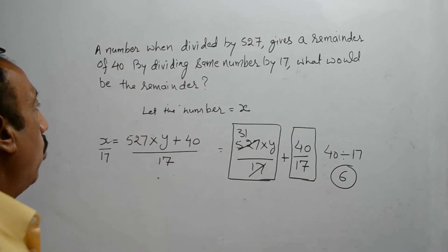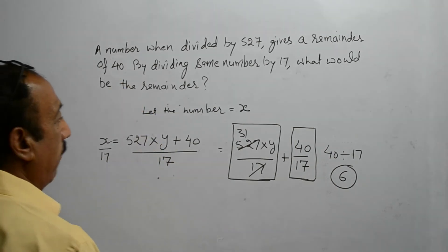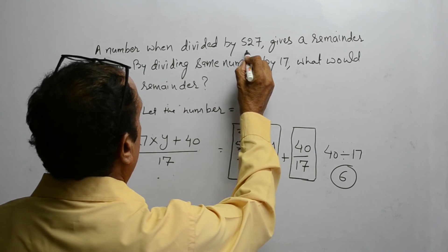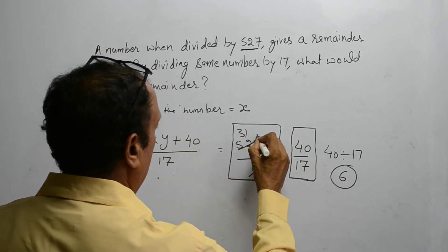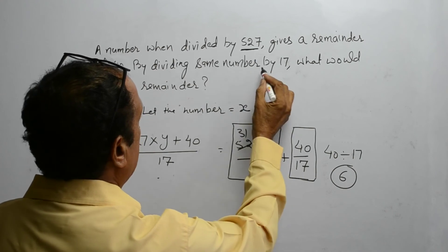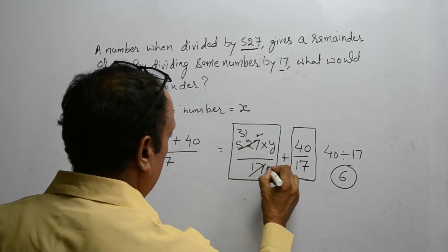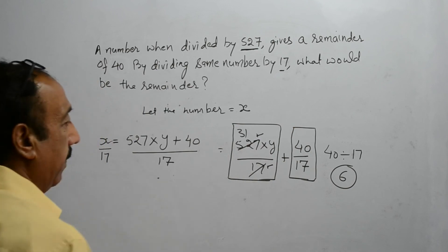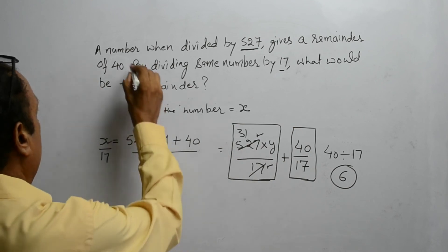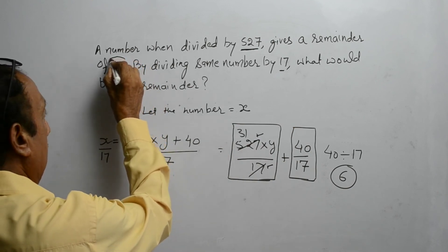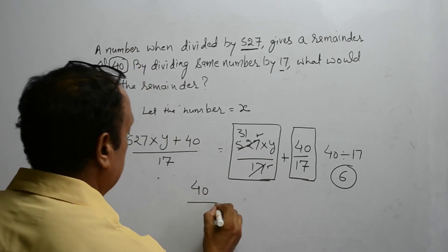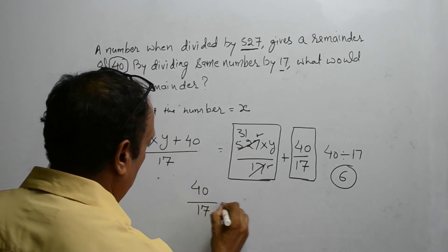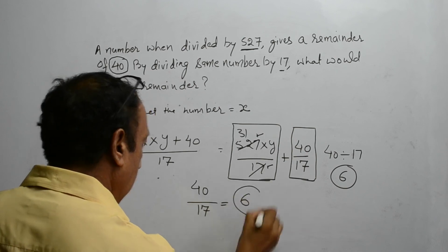Keep in mind one thing that in such type of questions, the first divisor is always divisible by the second divisor. It is always there. So, just by dividing the first remainder by the second divisor, we can get the answer.